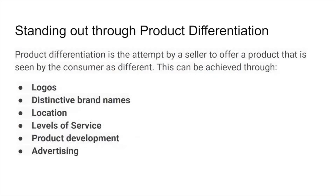The tools of differentiation include logos, brand names, location, levels of service, product development, and advertising. Aunt Sarah's Chocolate is a good example — they have a distinctive brand name, a nice logo, locations in tourist areas, a high level of personalized service, and interesting products. Cows ice cream in PEI and Halifax does the same thing with unique cow-themed product names like Cowzical. These firms invest heavily in advertising.